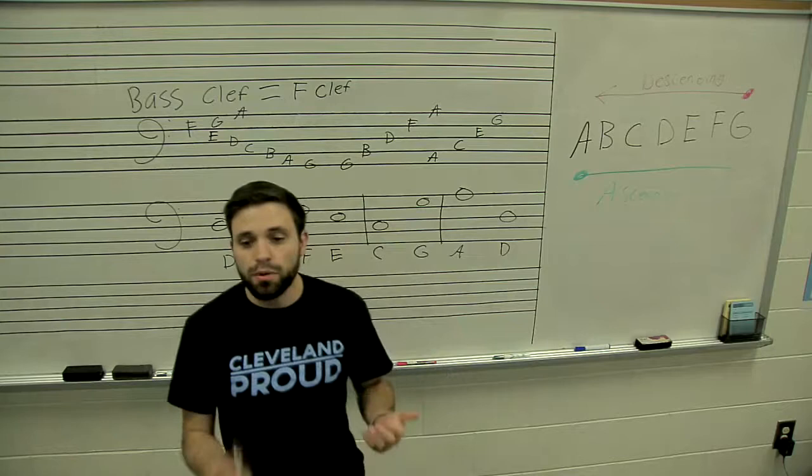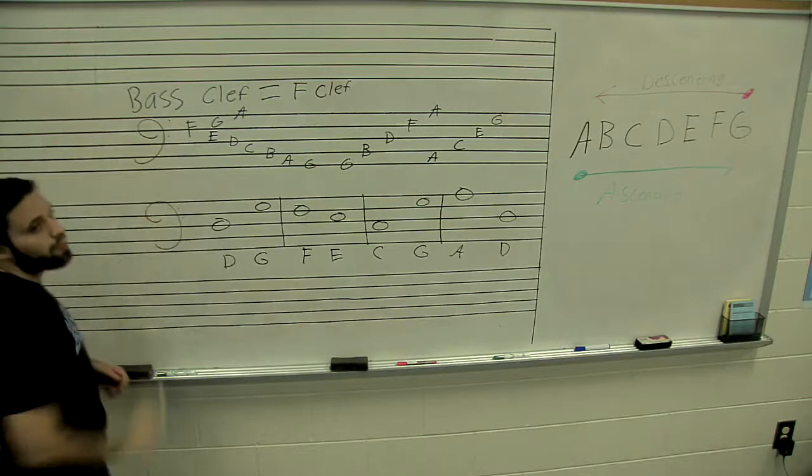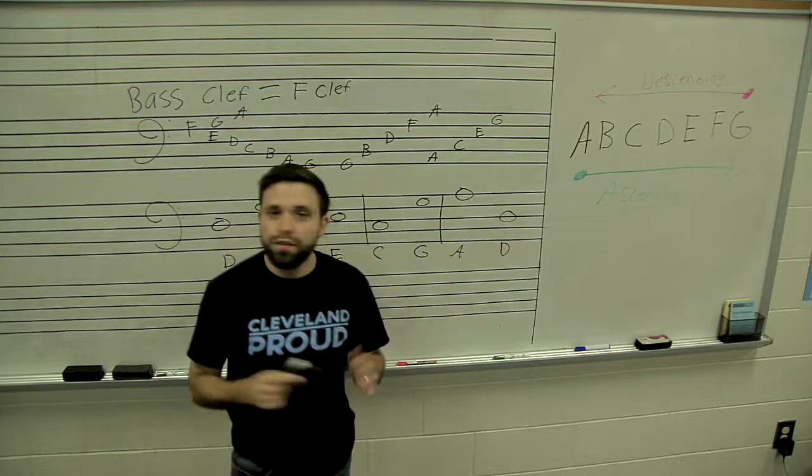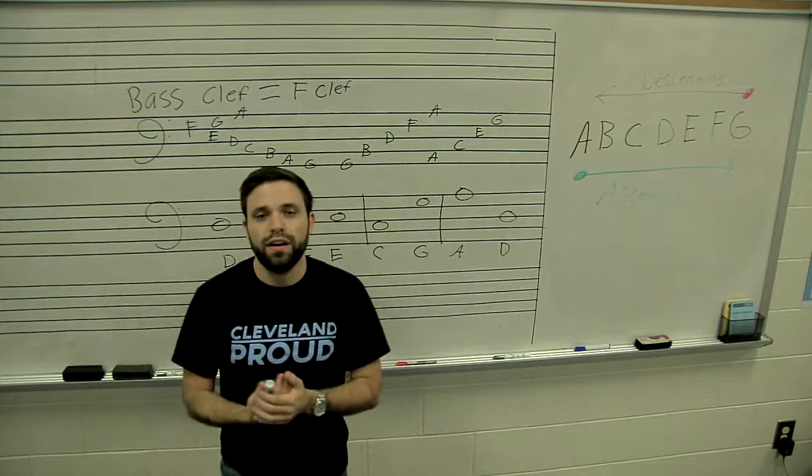So bass clef and treble clef are similar, but they're also different at the same time. They have a different set of notes. If you just know that the bass clef, the fourth line where the two dots go around is F, and in the same vein, in the treble clef, you know where that little loop goes around, that's called the G clef, then you'll be able to find any of the notes just by following the musical alphabet. It's super important to memorize this. It's not very hard to memorize. And once you kind of get that, you'll be able to name any note on the bass clef or the treble clef.